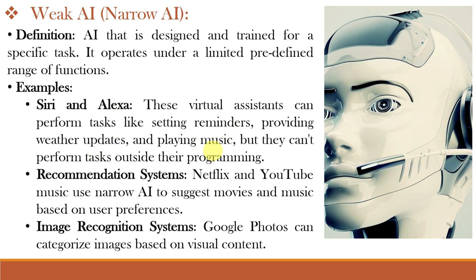Virtual assistants like Siri and Alexa cannot perform tasks outside their programming, so they are narrow AI. A second example is recommendation systems like Netflix and YouTube Music, which we have already understood in detail. A third example is image recognition systems like Google Photos, which can categorize images based on visual content — for example, Google Photos will show you photographs taken in different mountains at different times, grouped under the title 'mountains'.